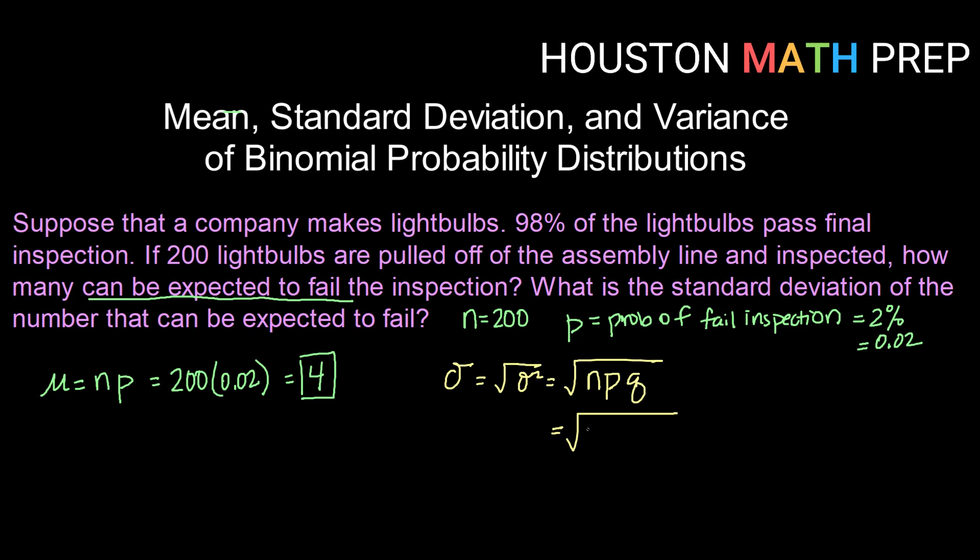So here, that will be the square root of 200, which is our number of light bulbs, times our p, or our probability of failing, 0.02 times q, or our probability of passing in this case, which is 0.98. So square root of 200 times 0.02 times 0.98 gives us 1.98 if we were rounding to two decimal places. So our standard deviation is 1.98 light bulbs.